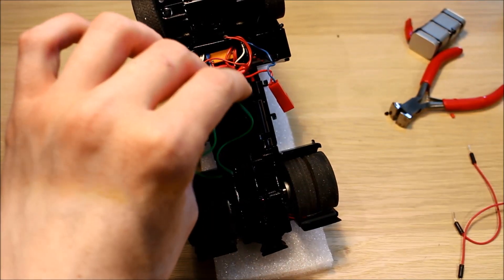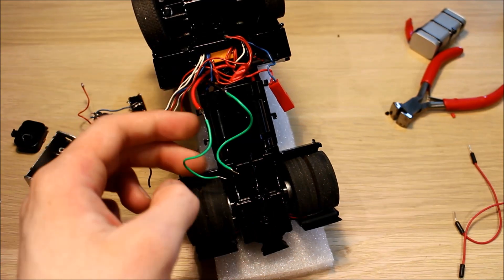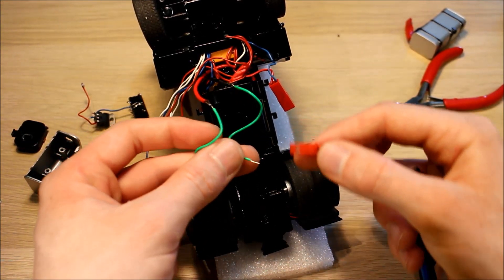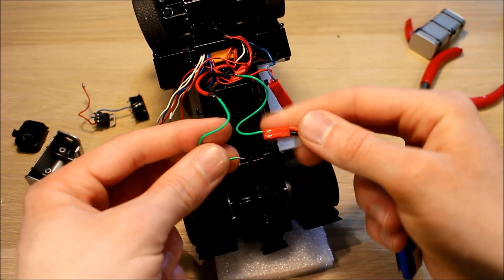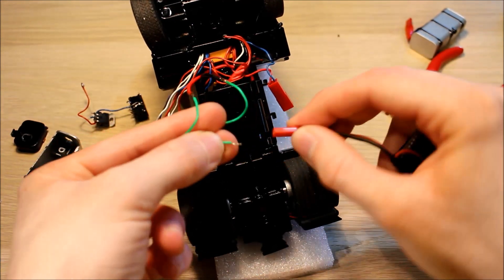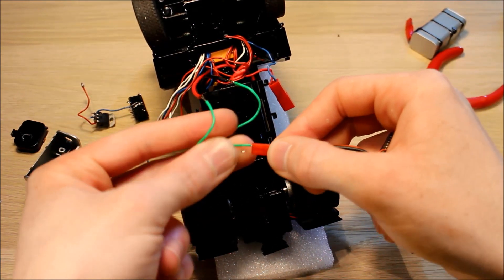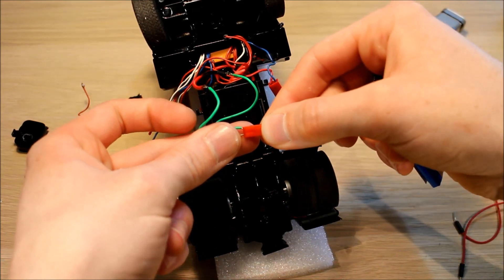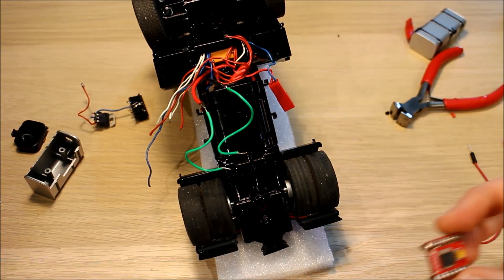I soldered some harder wire onto the end of the motor wires so that it would easily go into the breadboard. And see here if we hook it up to the battery, so it works fine directly from the 3.7 volt battery.